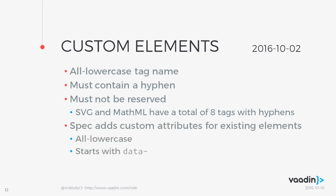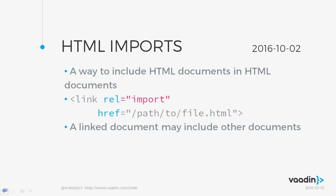The spec also allows adding custom attributes for existing elements using the same pattern: all lowercase, must include a dash, and prefixed with 'data'. If you need to extend an existing element with specific data for your web component, you stuff that into an attribute called 'data-' followed by whatever you want. HTML imports is basically a way to include HTML documents in HTML documents, and those can include other HTML documents — giving a chain of imports as in any programming language, done by adding a new relation keyword in the link element, specifying the path to a file.